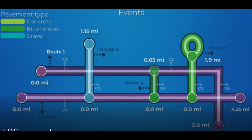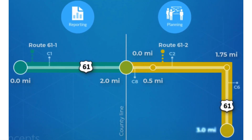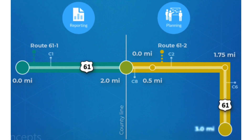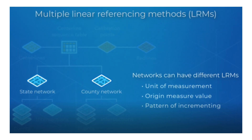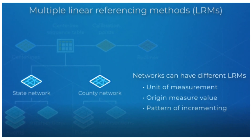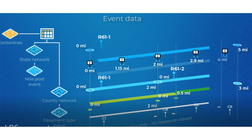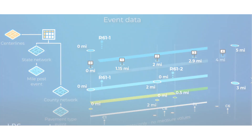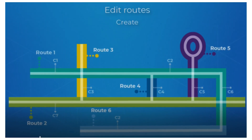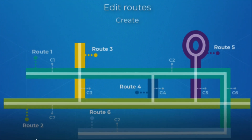You can visualize, query, edit, and analyze events without impacting the geometry, the centerline, or measures of the underlying route. For example, as you travel north along the increasing side of Route US 61, the speed limit decreases from 55 mph to 40 mph at Measure 71.5, before decreasing even further to 30 mph at Measure 72 as you enter the town of Lake City. The speed limit begins to increase at Measure 73.5 and again at Measure 74.4 as you continue north out of town. Each section of the route with a specific speed limit represents an event record from its start measure to its end measure.